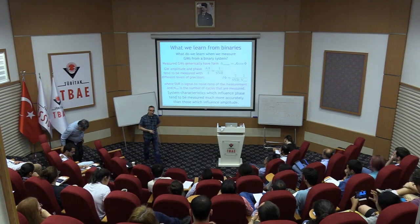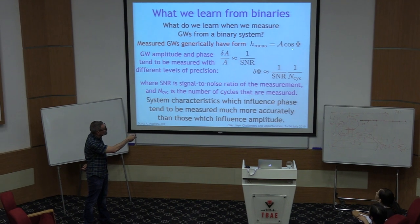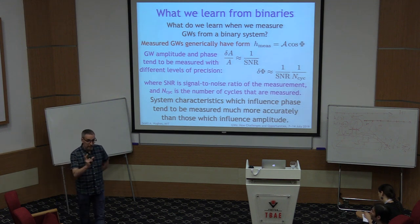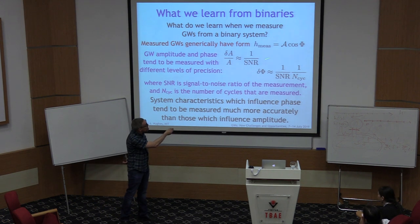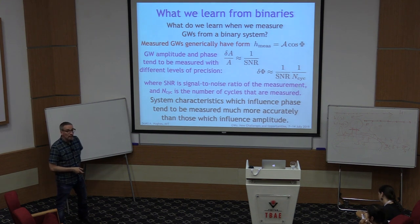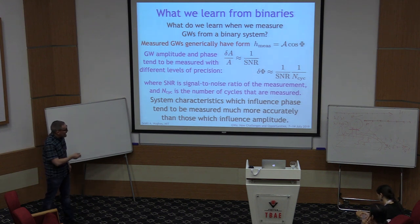Fundamentally, when we measure a gravitational wave, what are we measuring? Generically, you're measuring some kind of a sinusoid — an amplitude and a phase — at a particular signal-to-noise ratio. The amplitude is typically measured with a fractional error that is roughly 1 over the signal-to-noise ratio. The phase is measured much more accurately: with a fractional accuracy that is also 1 over the SNR, but also divided by the number of cycles in your measurement. Things which influence the phase tend to be measured a lot more accurately than things that influence the amplitude.